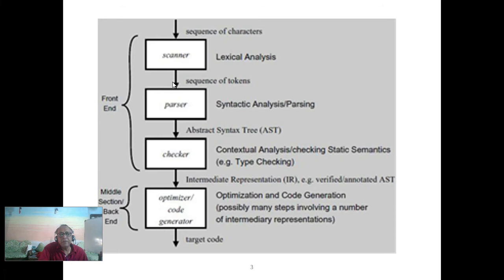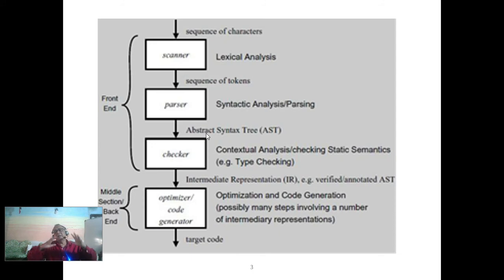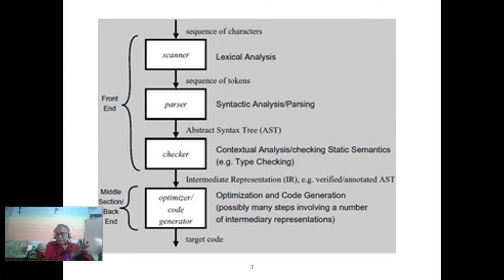After tokens are produced, we go to parsing. Parsing tries to determine how the sequence of tokens can be derived from the rules of the language. The parser is a program that builds a parse tree. Because the parse tree is verbose, we use an abstract syntax tree, which is much more compact. There are two main techniques: top-down parsing (LL1 is the best) and bottom-up parsing (LR1 is the best). We will cover both in later classes.